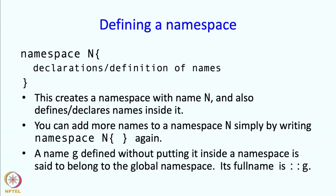A name g which is defined without putting it inside a namespace is said to belong to the global namespace. So all the names that you have been defining so far are in the global namespace. So their full name is colon colon g. So you could refer to them this way if you wish.